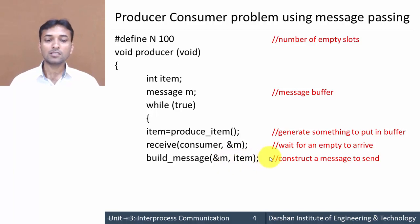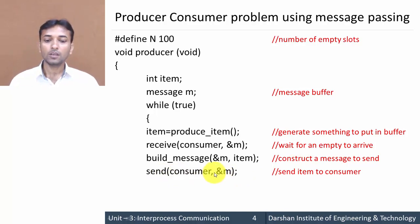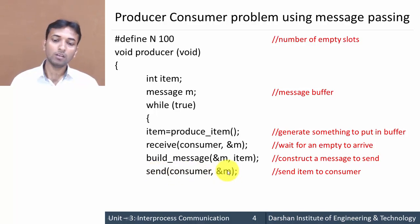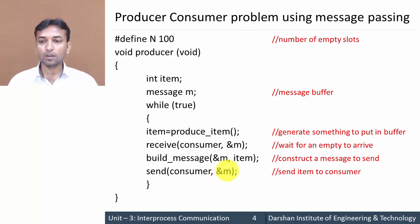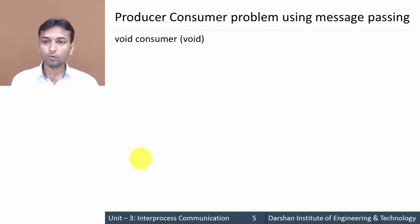Then 'send(consumer, &m)' — the producer sends the item to the consumer with the constructed message. This completes the while loop and the void producer function. So this function is called by a producer whenever the producer wants to produce some data and send it to the consumer.